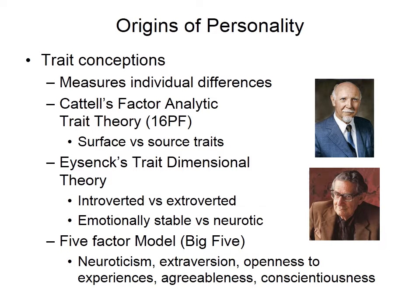Cattell's factor analytic trait theory — the 16PF — found surface and source traits, reducing hundreds of descriptors to 16 personality factors. Eysenck's trait dimensional theory said we can divide people into four broad categories: introverted versus extroverted, and emotionally stable versus neurotic. Finally, the Big Five — the five factor model — said there are five core dimensions of behavior: neuroticism, extroversion, openness to experience, agreeableness, and conscientiousness, each incorporating many of the various other descriptors.